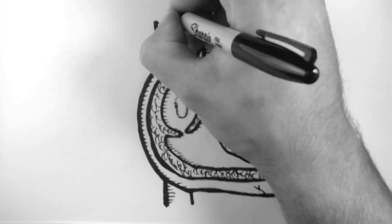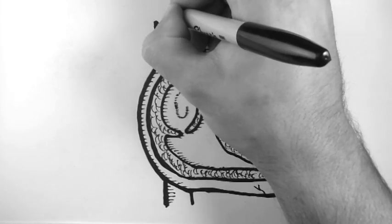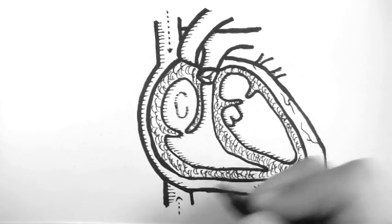So first of all, let's have a look at the way blood flows through the heart. Blood comes into the heart here and from here, and this comes from the body.